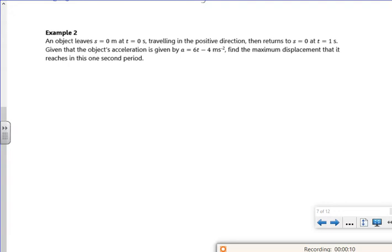So an object leaves s equals zero, t equals zero, so I know I've got some c-values there, travelling in the positive direction. It then returns to s equals 0 at t equals 1. Given that the object's acceleration is given by a = 6t - 4 m/s², find the maximum displacement that it reaches in this one second period.